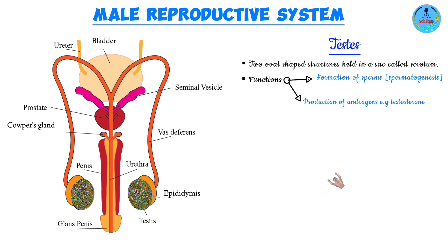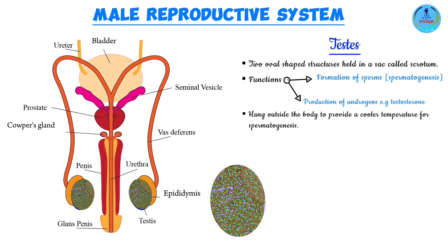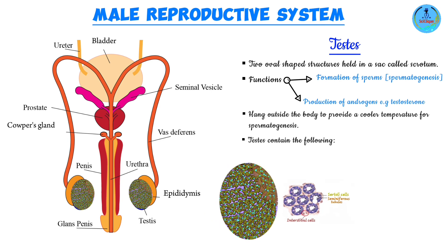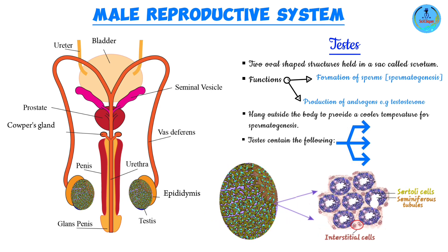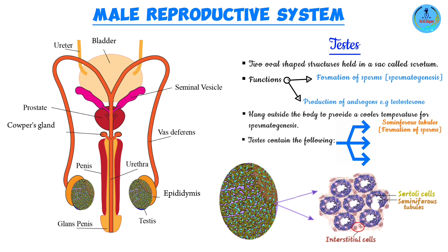The testes hang outside the body in order to provide a suitable temperature for the formation of sperm, since sperm develop best at temperatures lower than that of the body. Within the testes, there are long and highly coiled tubes known as the seminiferous tubules. The function of these tubules is the formation of sperm, and the reason why these tubes are long is to provide a large surface area for spermatogenesis.